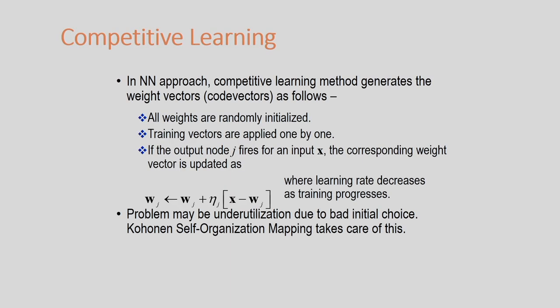Unsupervised artificial neural networks can be employed for unsupervised clustering, like k-means or fuzzy k-means clustering. The first concept is competitive learning: in the neural network we consider competitive learning to generate weight vectors, which are the code vectors. First, randomly initialize all weights in the network. Then the training vectors x are applied one by one, and if the output node j fires for a particular input x, the corresponding weight vector is updated.